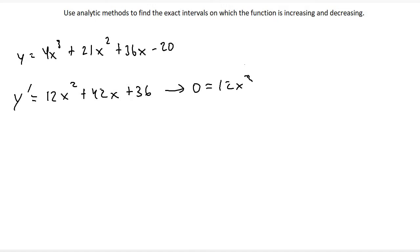So I'll write 12x squared plus 42x plus 36 once again. And notice that we can factor this polynomial. I can take out a 6. So when I factor out a 6, I'll get 2x squared plus 7x plus 6.